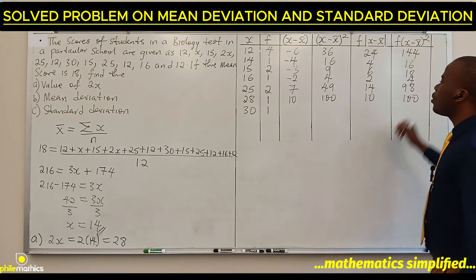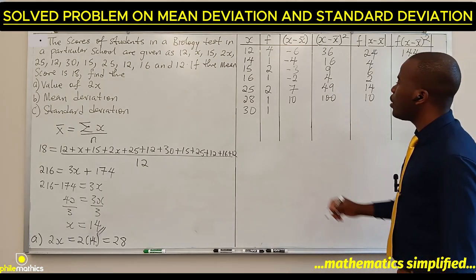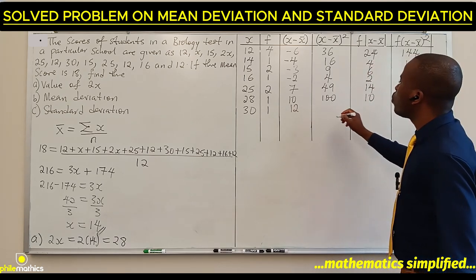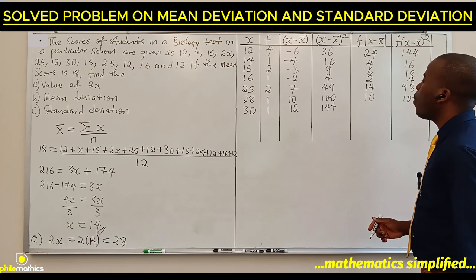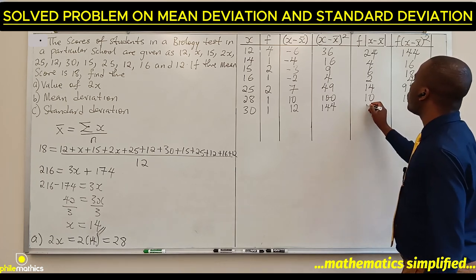Finally, 30 minus 18 is 12. 12 squared is 144. 1 times 12 is 12, and 1 times 144 is 144.